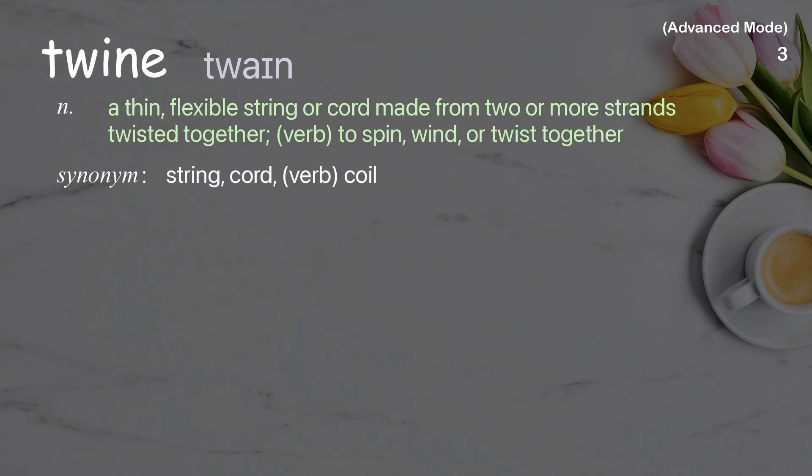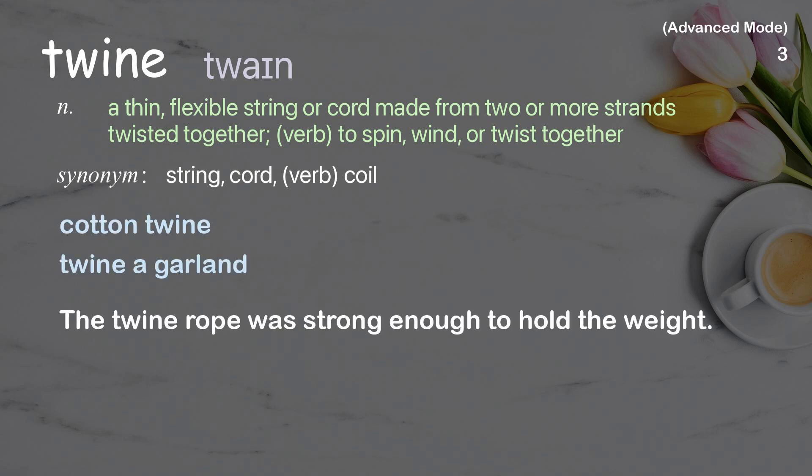Twine. A thin, flexible string or cord made from two or more strands twisted together. Verb: to spin, wind, or twist together. Examples: cotton twine, twine a garland. The twine rope was strong enough to hold the weight.